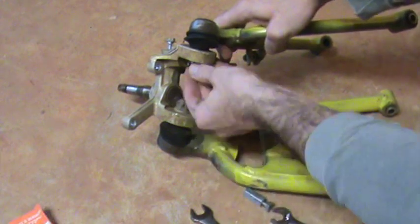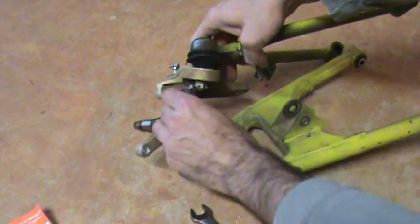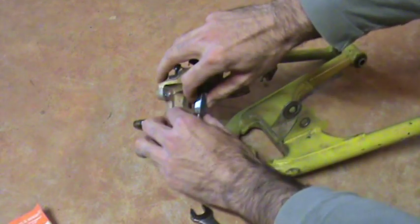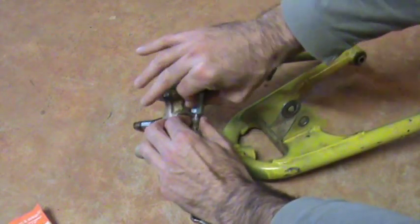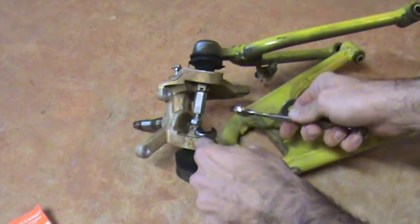Now you can leave that castle nut on there and then you back off this one. Put this back in. Snug it down and you just keep going.